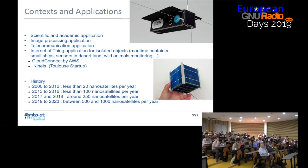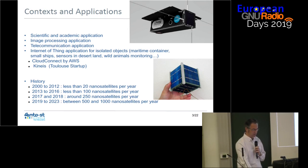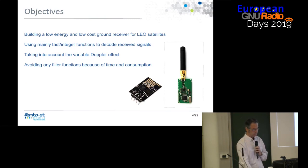From the year 2000 to 2012, there were something like fewer than 20 nanosatellites per year launched. In the near future, it will be something like 500 to 1,000 a year.